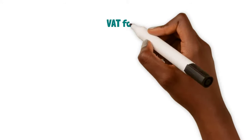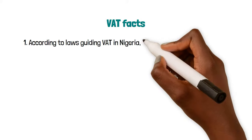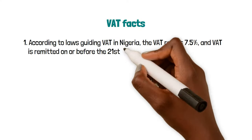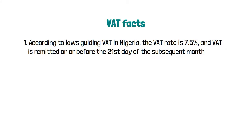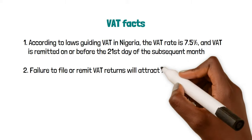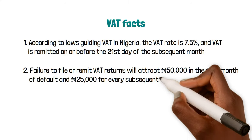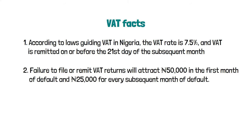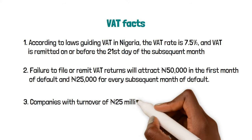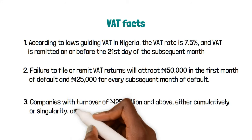Here are some VAT facts. 1. According to laws guiding VAT in Nigeria, the VAT rate is 7.5% and VAT is remitted on or before the 21st day of the subsequent month. 2. Failure to file or remit VAT returns will attract 50,000 naira in the first month of default and 25,000 naira for every subsequent month of default. 3. Companies with turnover of 25 million naira and above, either cumulatively or singularly, are to remit VAT.